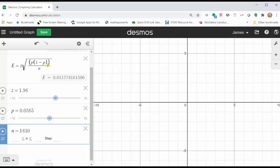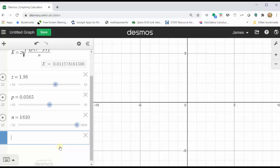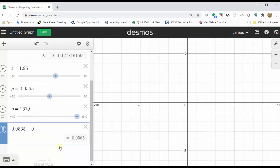So again, this is a value we subtract and add to the sample proportion, p. Let's do this in cell six and seven. In cell six, we have 0.0565 minus 0.0113. The lower bound of the 95% confidence interval is 0.0452.